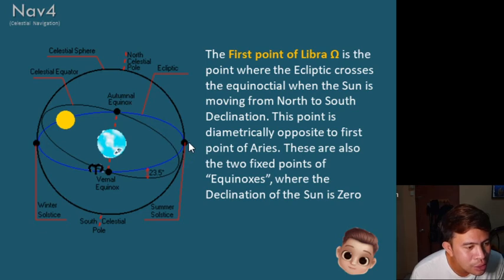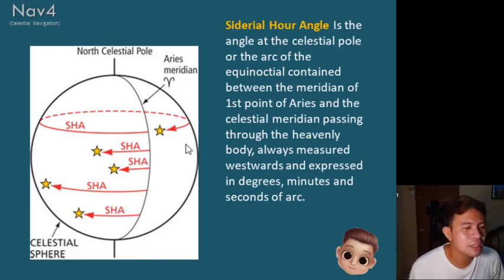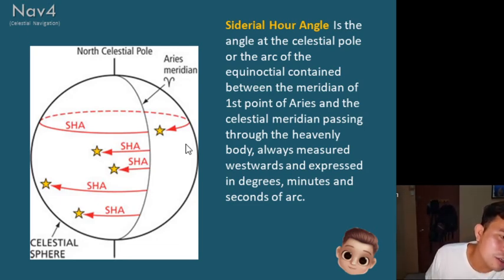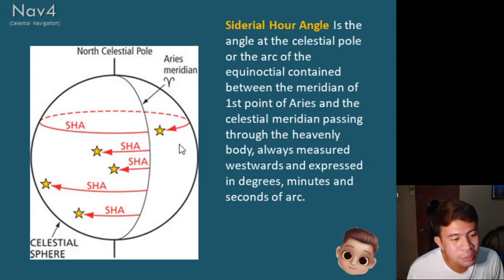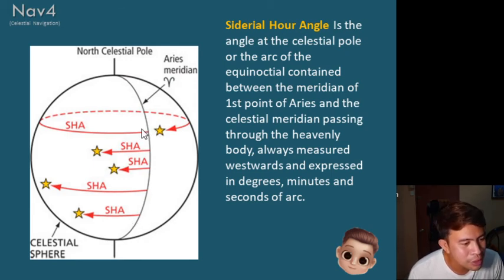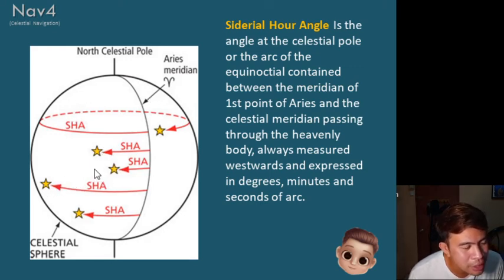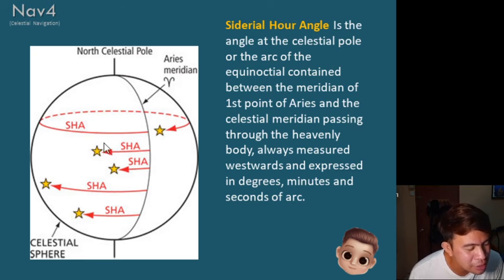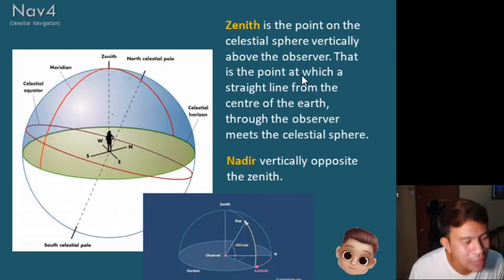The sidereal hour angle is the angle at the celestial pole, or the arc of the equinoctial contained between the meridian of the first point of Aries and the celestial meridian passing through the heavenly body, always measured westwards and expressed in degrees, minutes, and seconds of arc. The first point of Aries serves as the reference point, and the angle measured westward from it to the star is your sidereal hour angle.